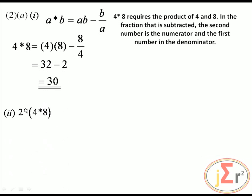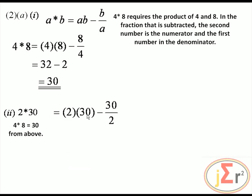Next, find 2 asterisk (4 asterisk 8). Since 4 asterisk 8 has already been calculated as 30, we replace it: 2 asterisk 30. That gives 2 times 30 minus 30 divided by 2, which is 60 minus 15, equal to 45.